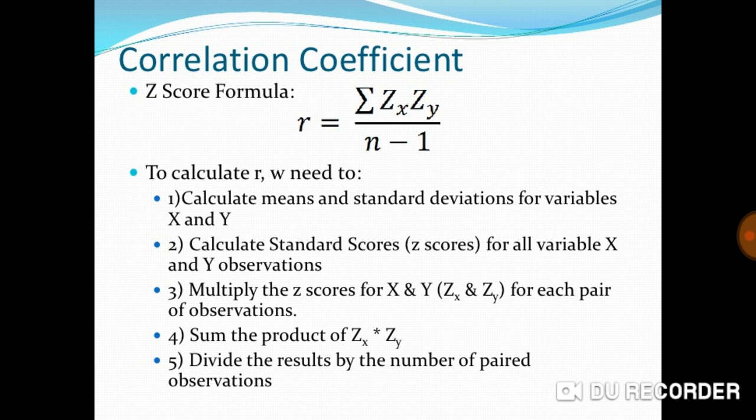Four, sum the product of Zₓ * Zᵧ. Number five, divide the results by the number of paired observations.